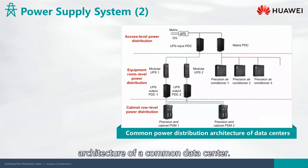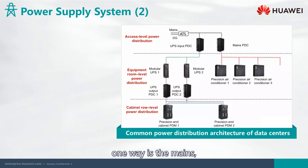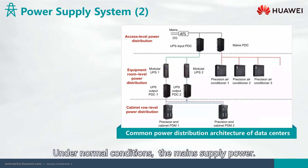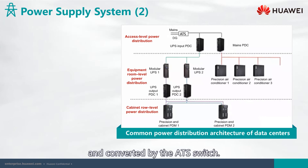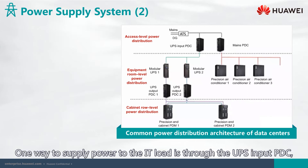Let's take a look at the power distribution architecture of a common data center. There are two ways to provide power input: one way is through the main mains supply, and the other is by diesel generator. Under normal conditions, the mains supply power. When the mains supply is interrupted, power is provided instead by the diesel generator and converted by the ATS switch.